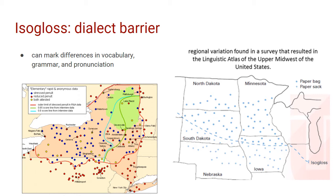A similar example is seen in a Midwest Great Lakes map with a drawn isogloss. Researchers asked people what they put their groceries in — if they said 'paper bag' they got a circle, and if they said 'paper sack' they got a cross. There's a pretty distinct line showing where people choose either 'bag' or 'sack,' and there are likely some interesting pronunciation differences as well. So vocabulary can be another way to trace an isogloss.